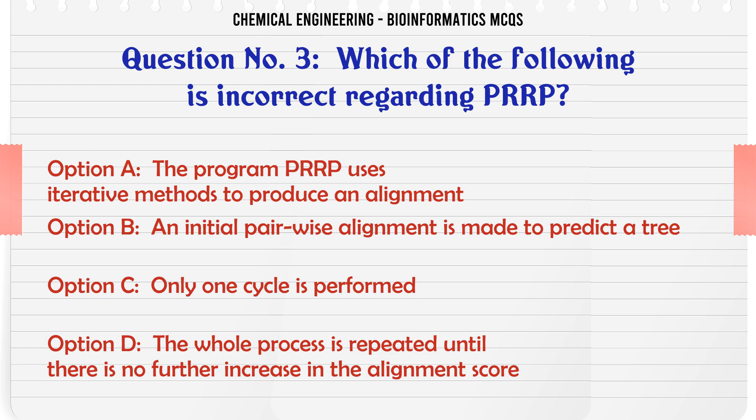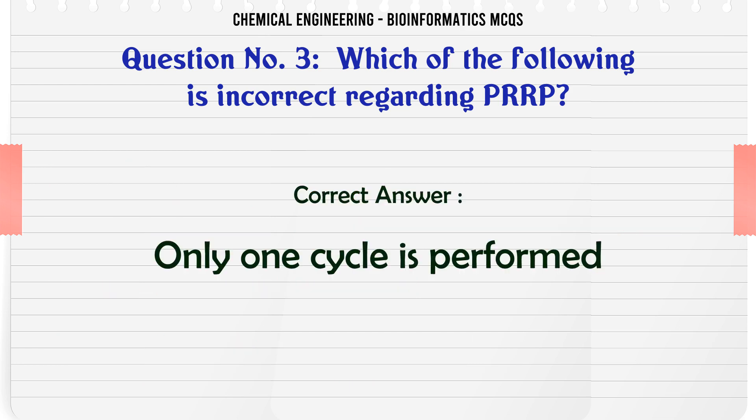C. Only one cycle is performed. D. The whole process is repeated until there is no further increase in the alignment score. The correct answer is: Only one cycle is performed.